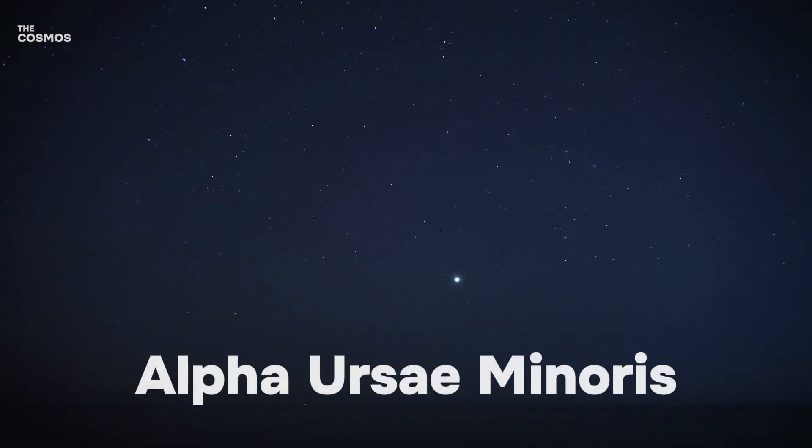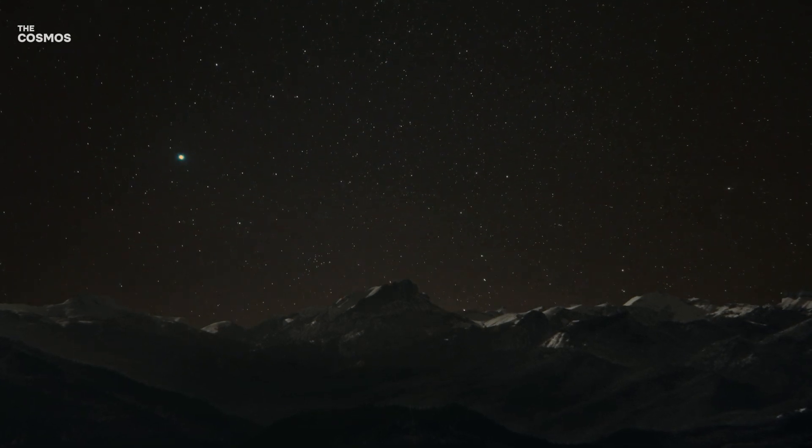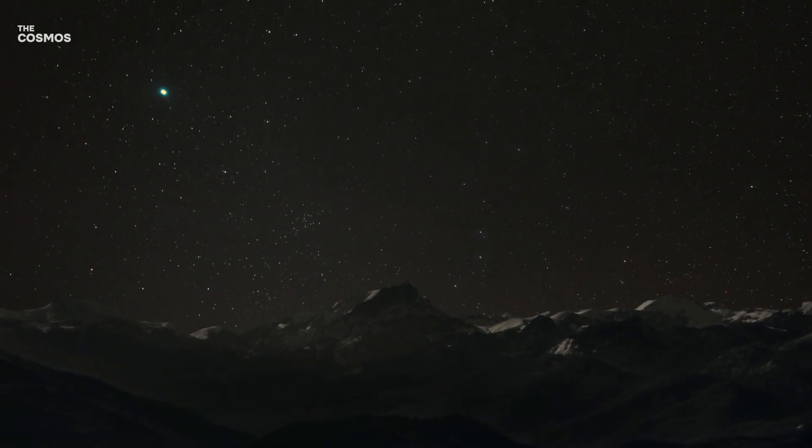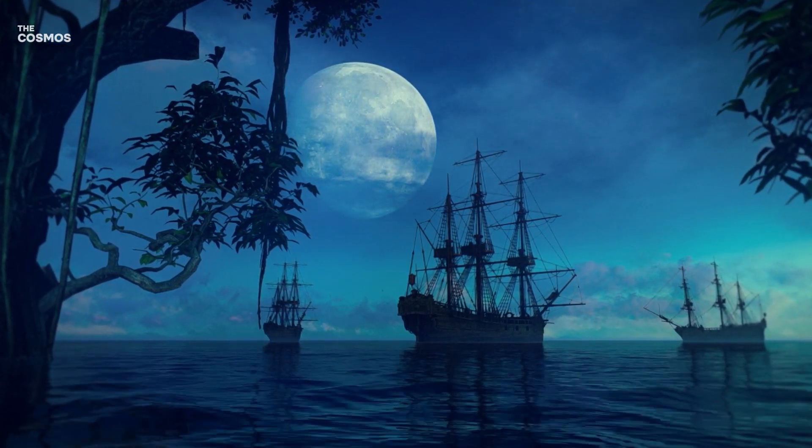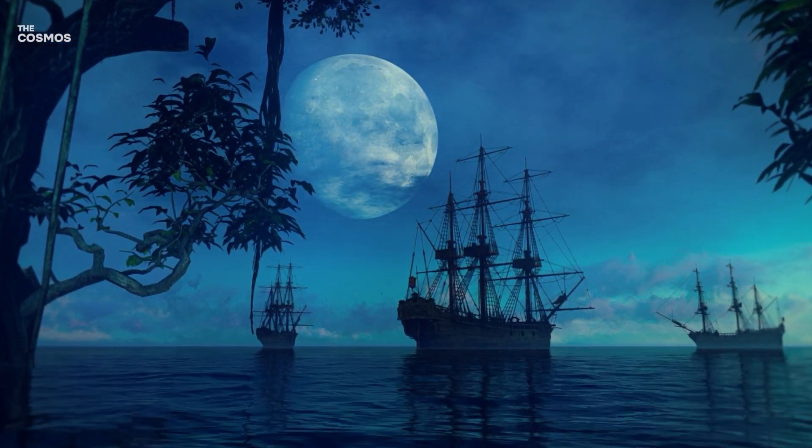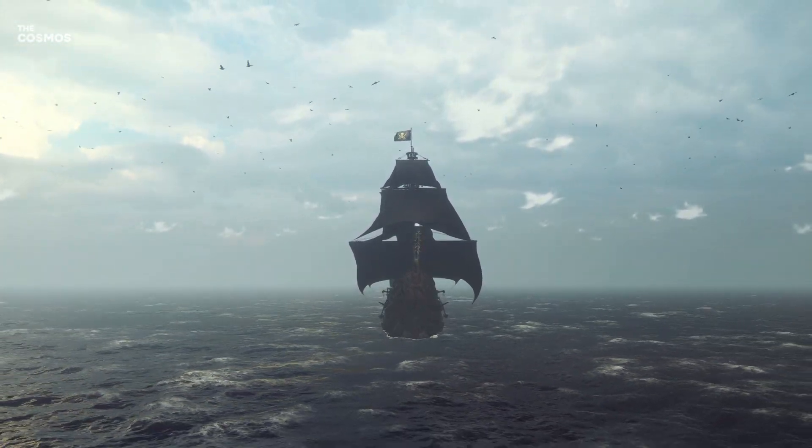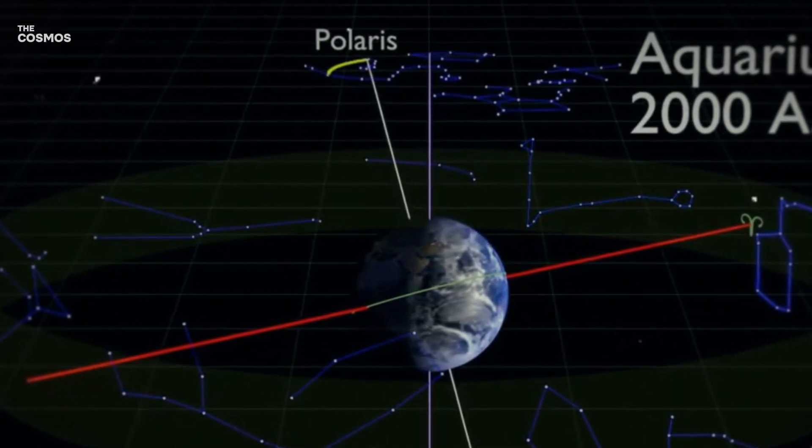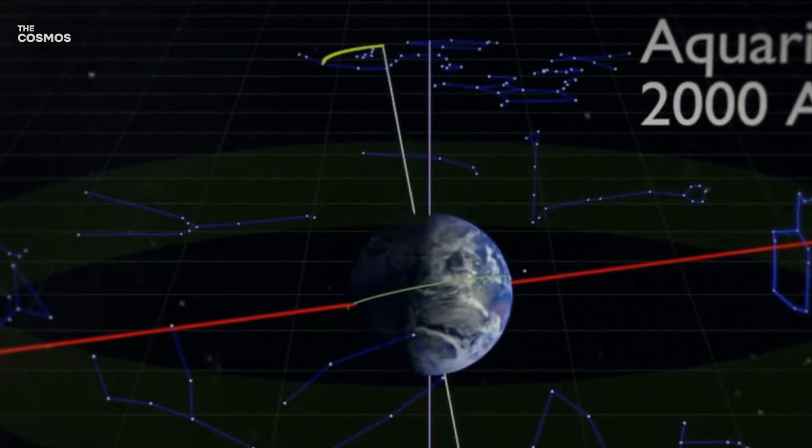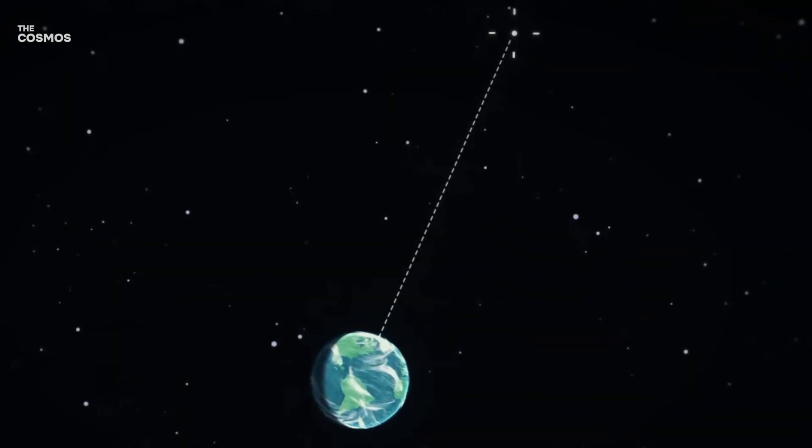Polaris or Alpha Ursa Minoris shines as the 48th brightest star in our night sky, adorned with a soft yellowish glow. Its proximity to the celestial North Pole has historically rendered it invaluable for navigation, enabling sailors and adventurers to discern true North and navigate the vast oceans and unknown lands. The star's near static position in the night sky is a consequence of its alignment with Earth's axis of rotation, giving the illusion of a celestial anchor around which the heavens revolve.